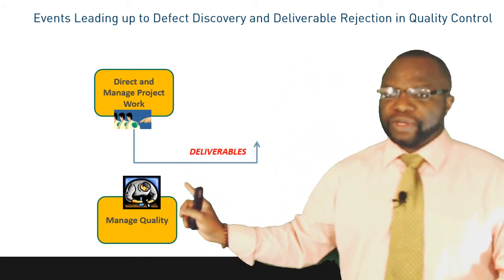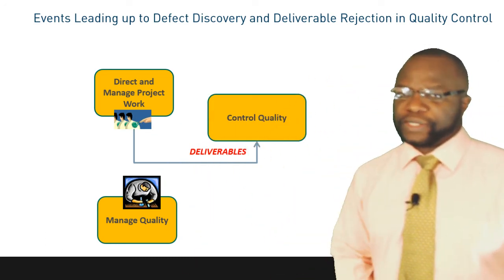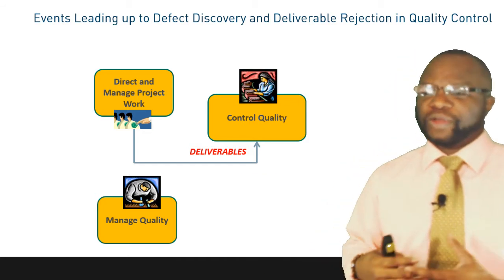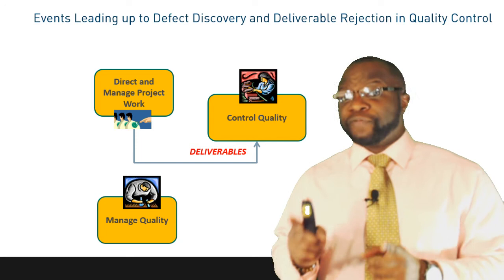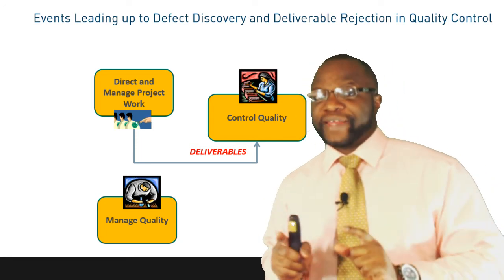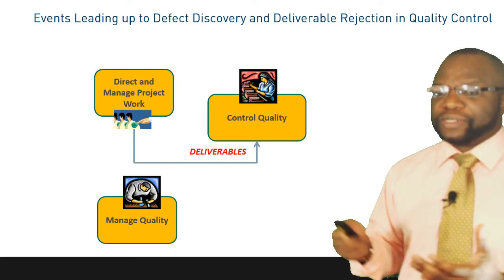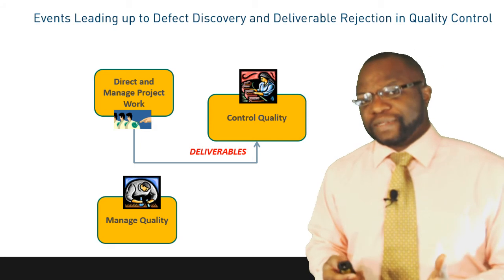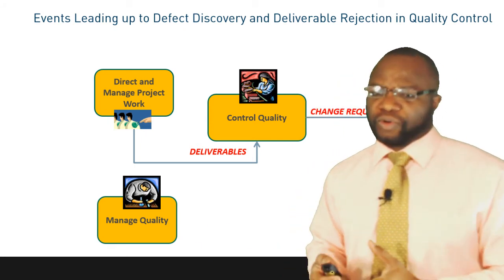Deliverables come out of Direct and Manage Project Work and go to Control Quality. In Control Quality, we are checking to ensure that the deliverable is fit for use, conforms to requirements, and will most likely satisfy the customer. So we have the lady on the conveyor belt taking a look at the deliverables. She decides this is not a good deliverable — in fact, there's a defect. So a change request is raised from Control Quality.